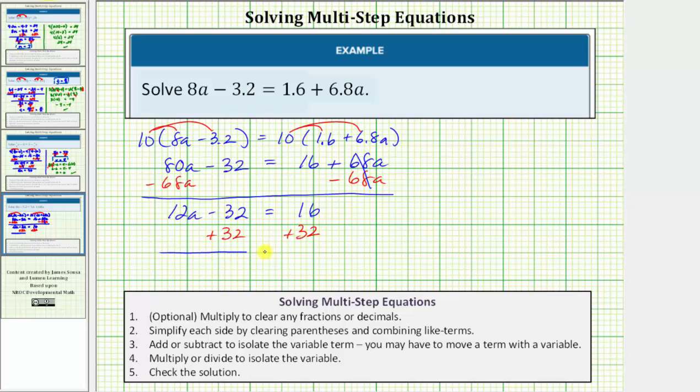And again we simplify. Minus 32 plus 32 is zero. The left side simplifies to 12a. On the right, 16 plus 32 equals 48. So now we have 12a equals 48.